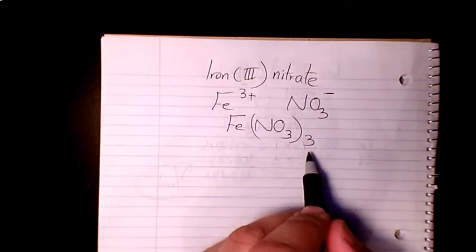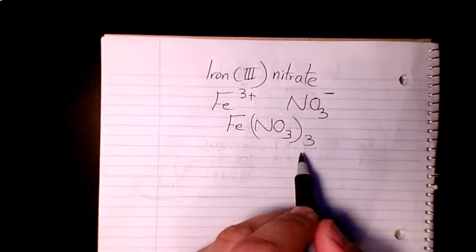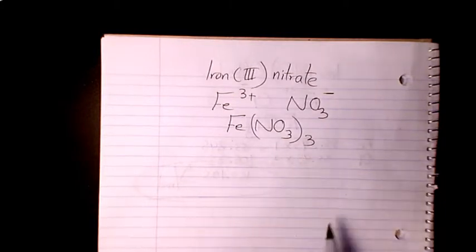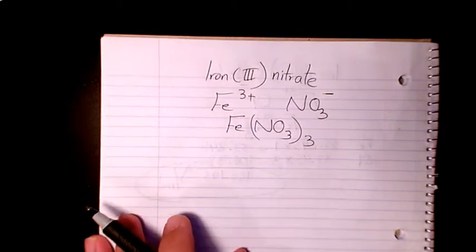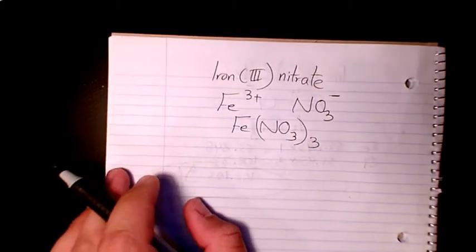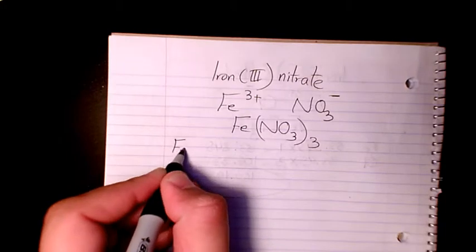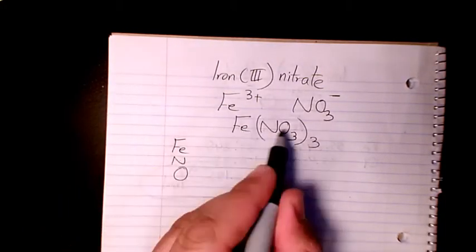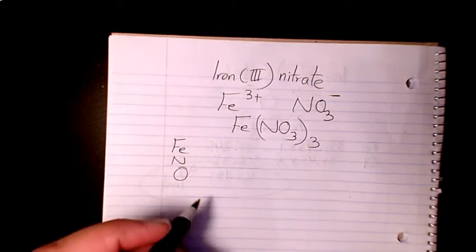And then after that I need to find out the molar mass or molecular weight of iron(III) nitrate. In order to find out the molar mass, I need to list the elements available here which is Fe iron, N nitrogen, and O oxygen.